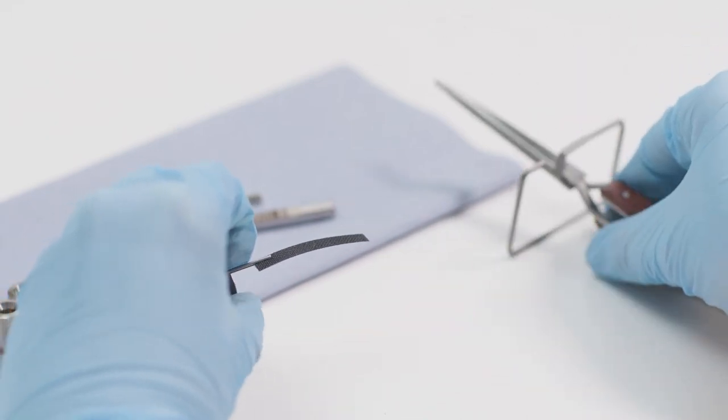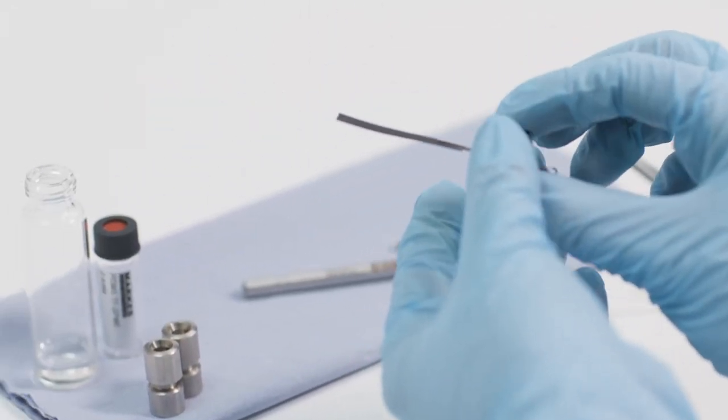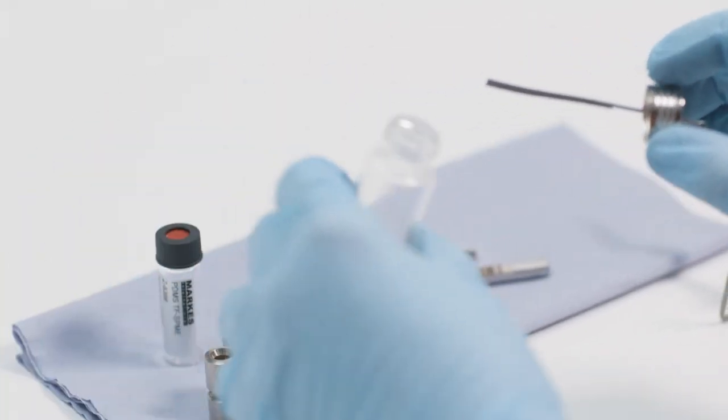Seal the membrane in the vial and adjust the membrane insertion depth by moving the cotter pin accordingly.